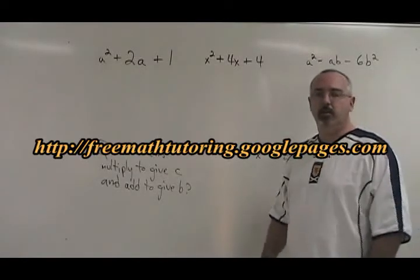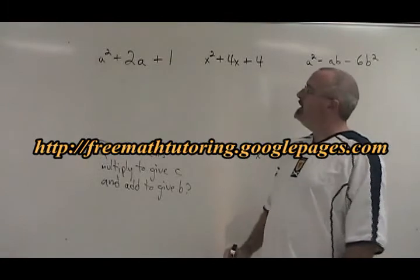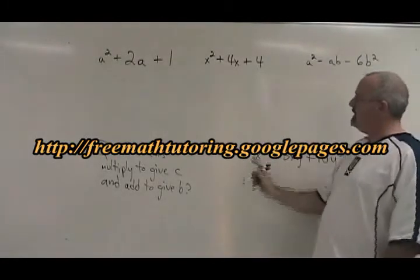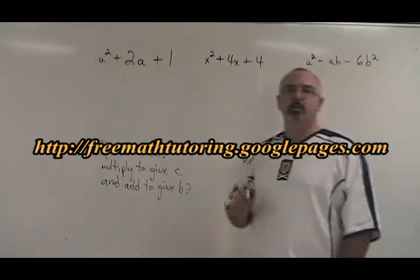The third method of factoring is what I call simple trinomial. It's simple because each of these trinomials have a first term whose numerical coefficient is 1.